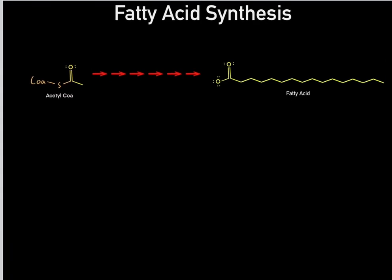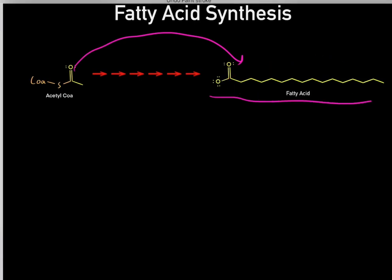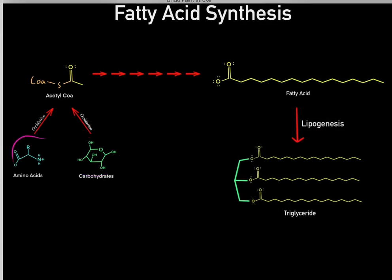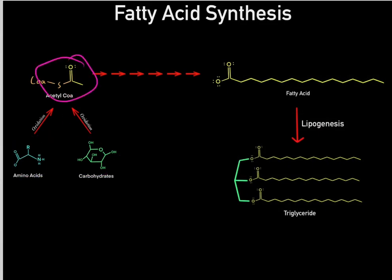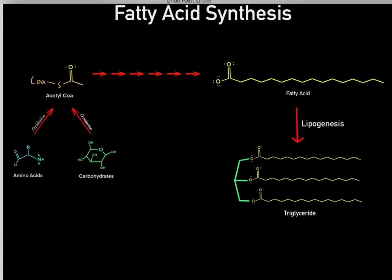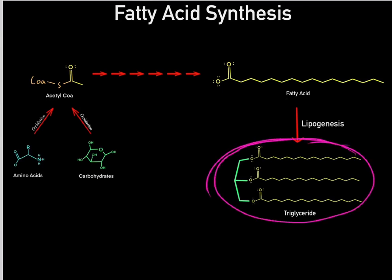Something most people don't realize is our cells can biosynthesize fat and free fatty acids. Our cells take carbohydrates and amino acids and oxidize them to form acetyl-CoA. Once we form acetyl-CoA we can use these two carbons to biosynthesize free fatty acids. Once we biosynthesize these free fatty acids we can go through lipogenesis to biosynthesize triglycerides, which is the primary storage form of energy our body uses.